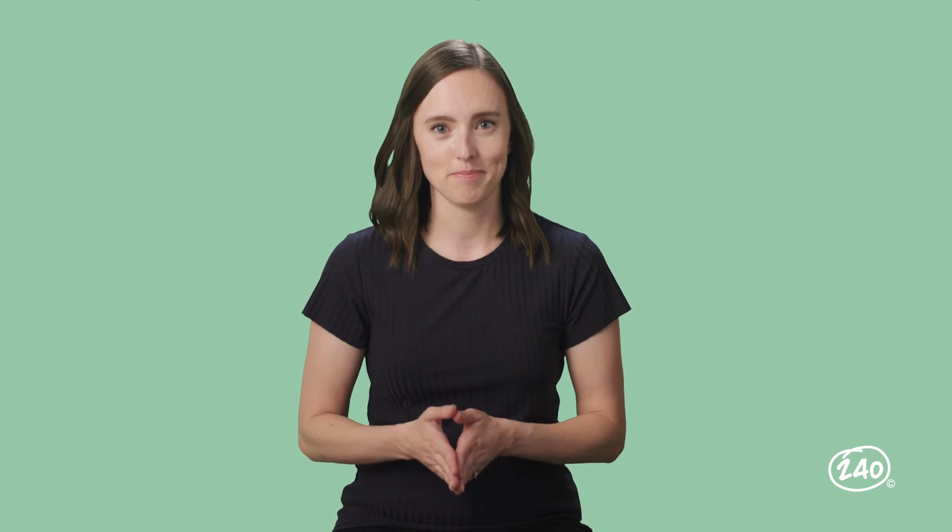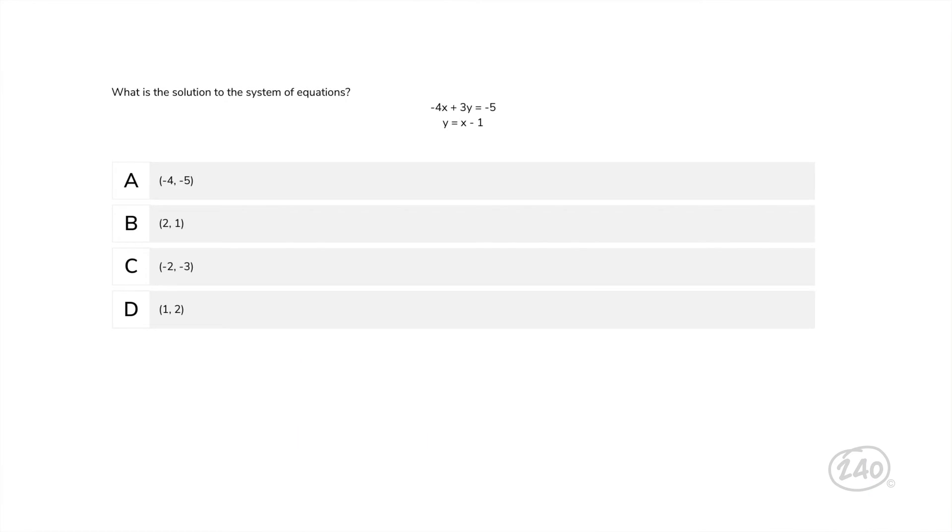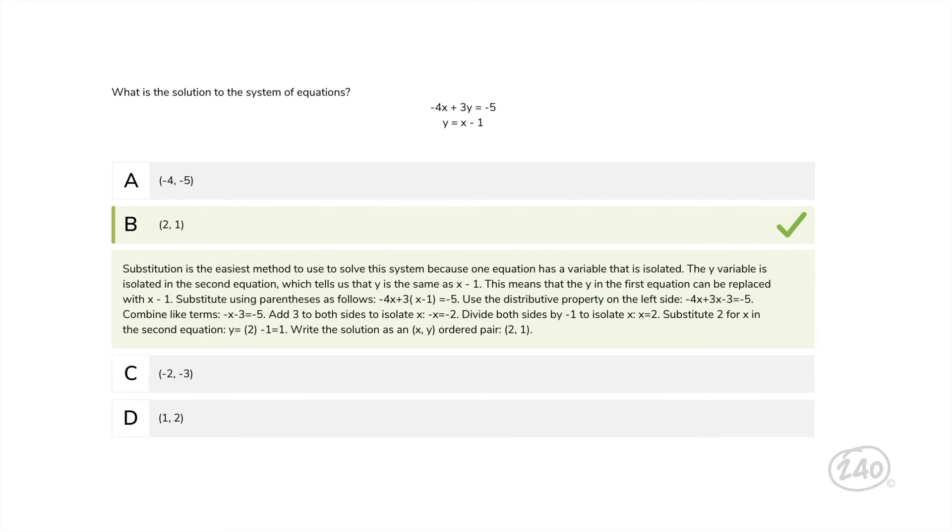Moving on to the algebra section. What is the solution to the system of equations? Negative 4x plus 3y equals negative 5. And y equals x minus 1. Substitution is the easiest method to use to solve this system because one equation has a variable that is isolated. So we can substitute in x minus 1 for y. Now our equation is negative 4x plus 3 times the quantity of x minus 1 equals negative 5. If we simplify, we end up with x equals 2. Then we substitute x into our second equation and y equals 1. So the correct answer is 2 comma 1.